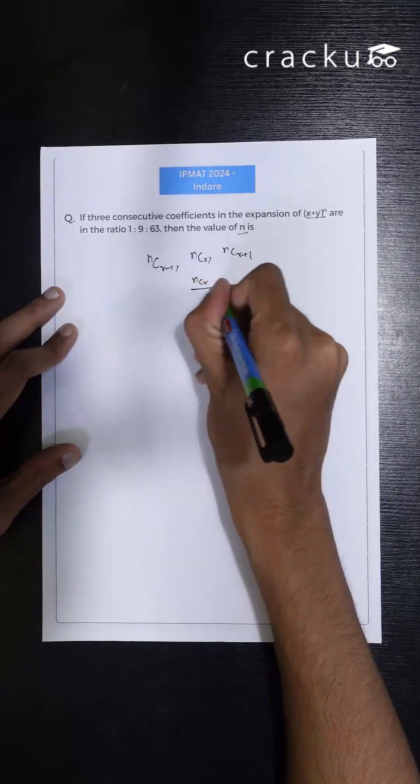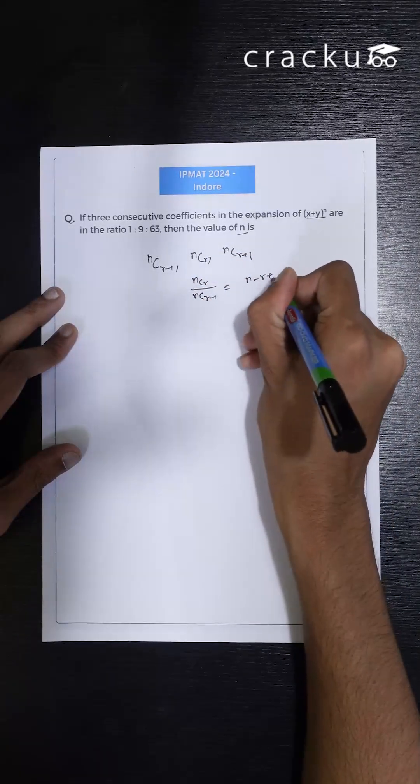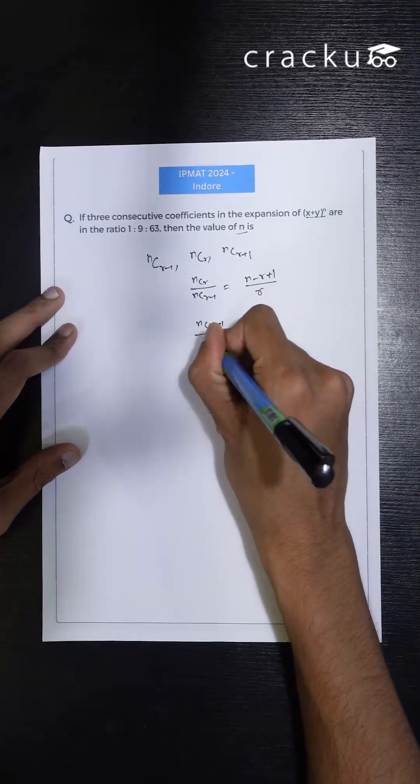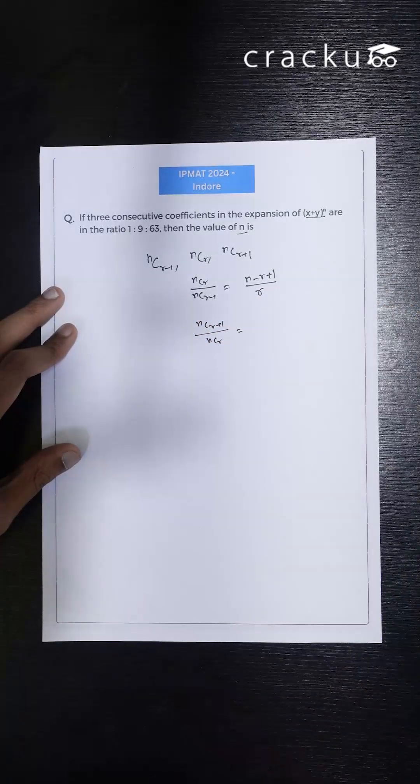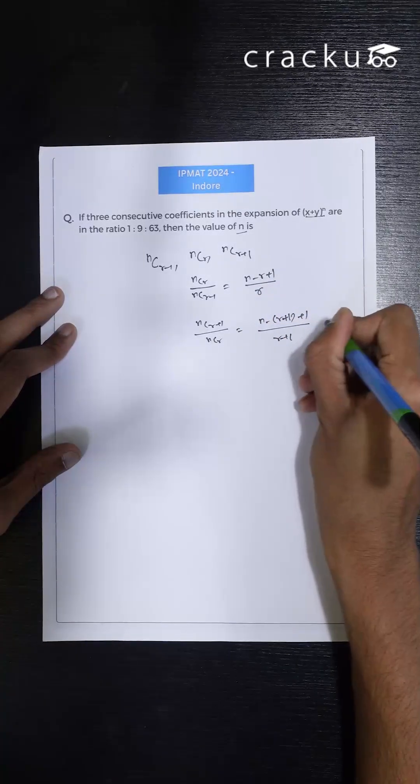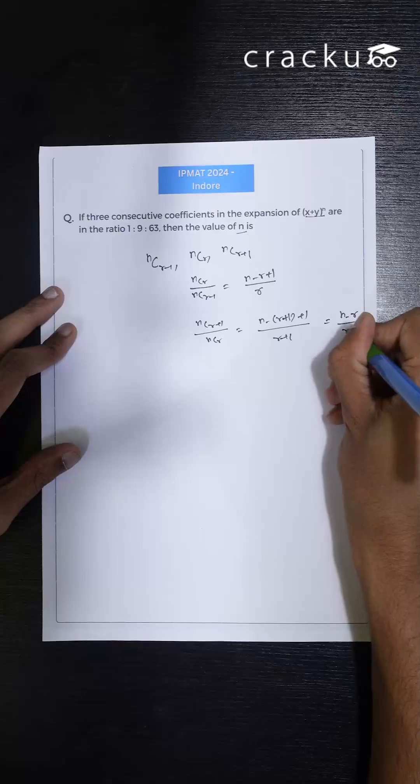We know nCr by nC(r-1) is nothing but (n-r+1)/r, and nC(r+1) by nCr, using the same formula, I can replace r by r+1, it would be (n-r)/(r+1).